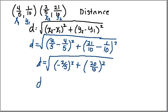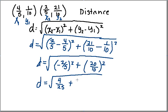So here my distance is going to be equal to the square root of — now I've got negative two-fifths squared, which gives me four on top squared, twenty-five on the bottom squared, plus over here I've got twenty squared, which is four hundred, over ten squared, which is a hundred.